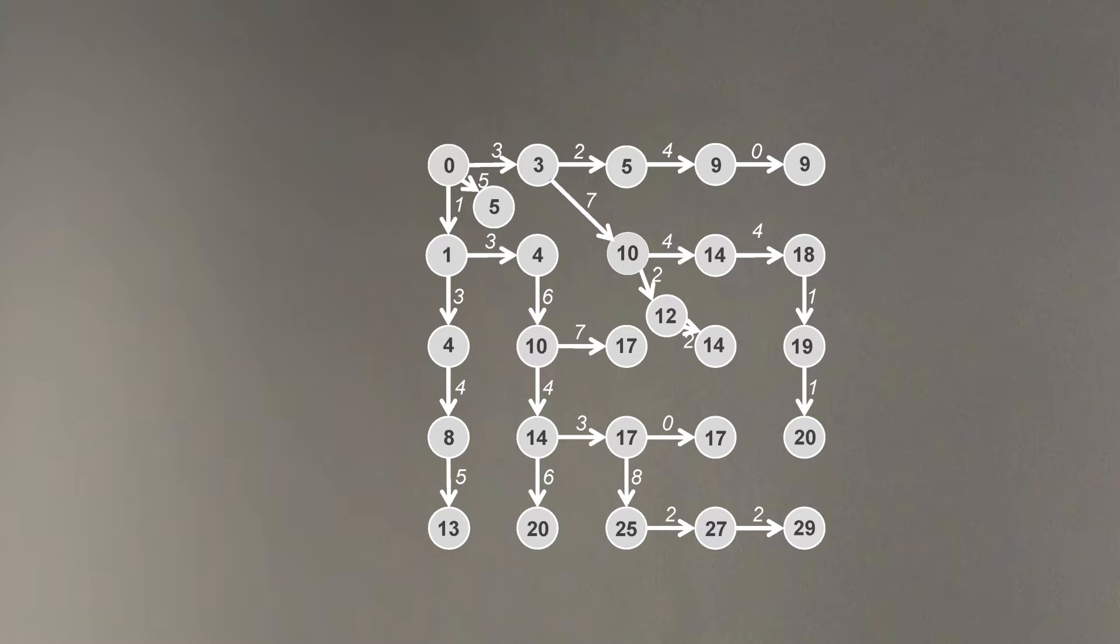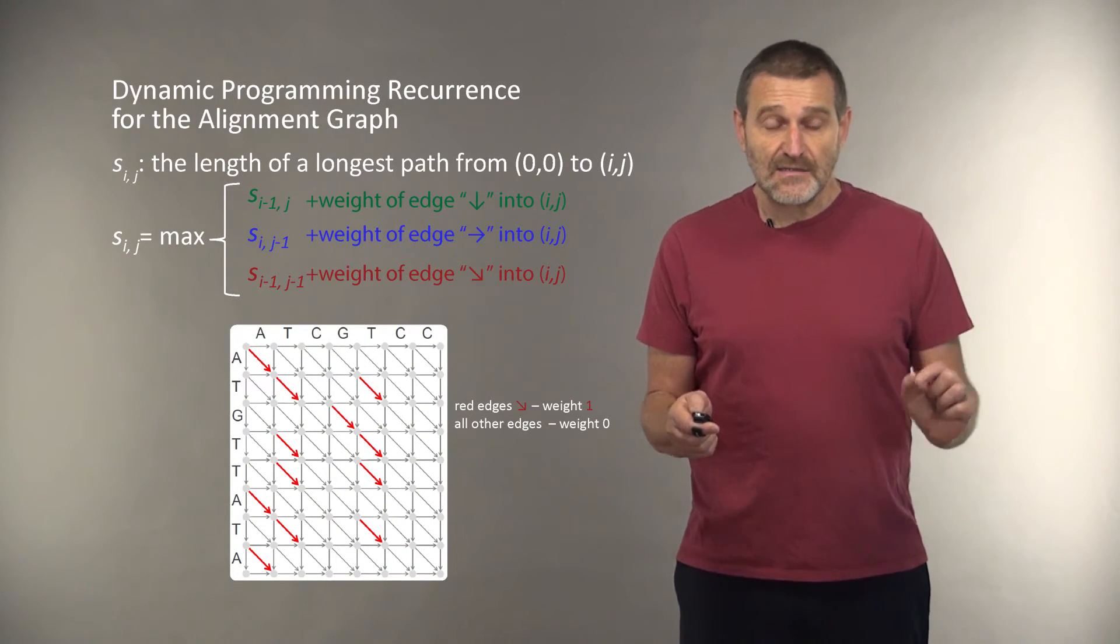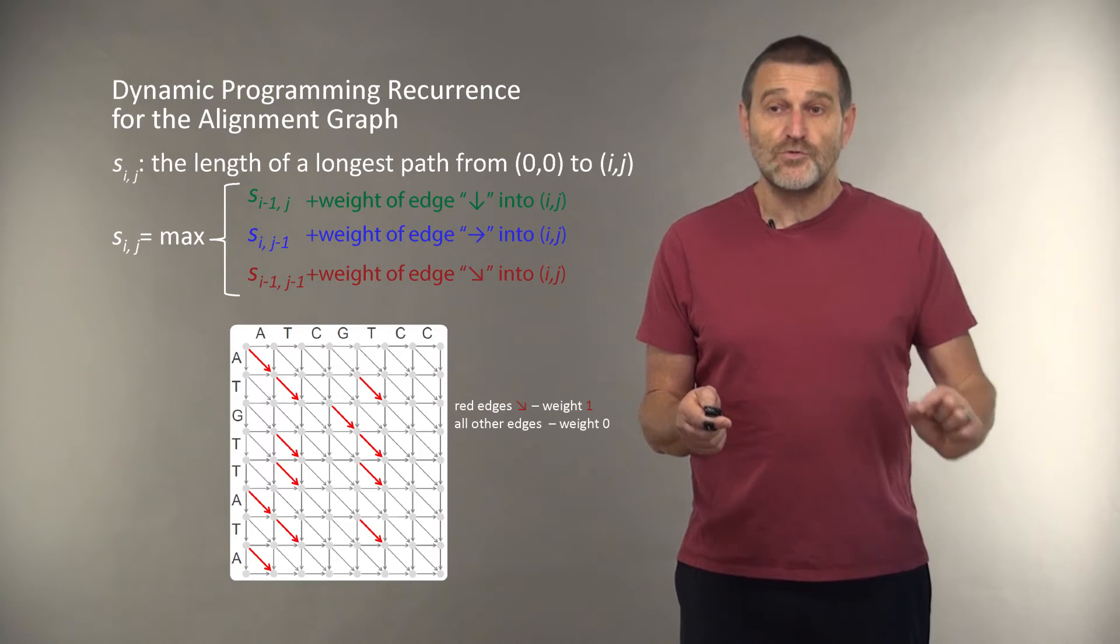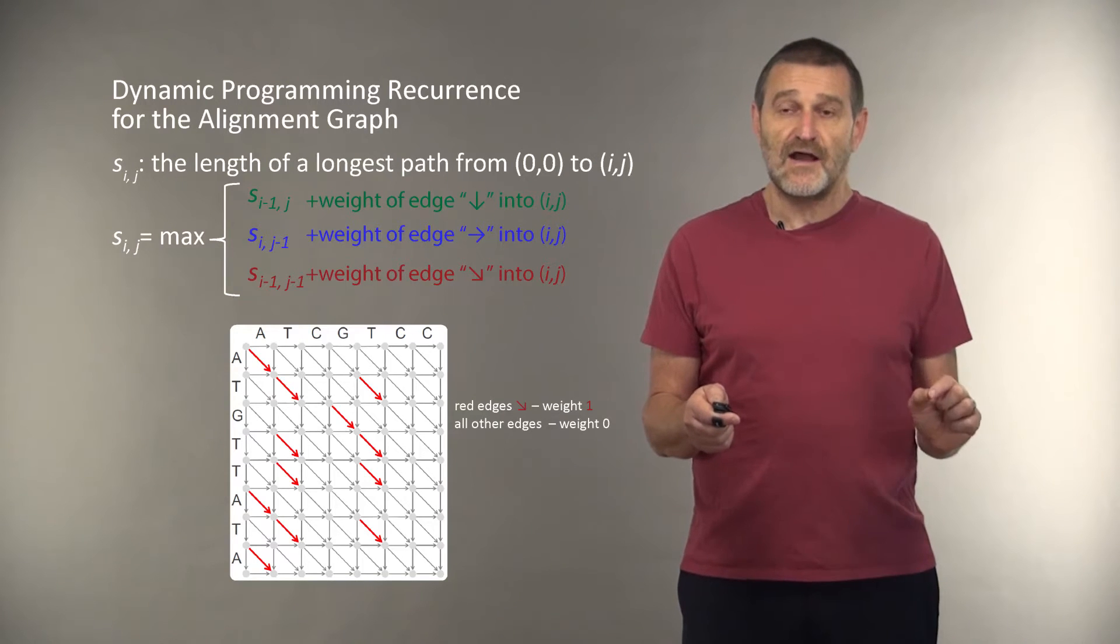And as before, we of course preserved the backtracking pointers. And that's why we will know how to move back in this graph and find the optimal path itself. As a result, we now know how to construct the recurrence for dynamic programming in alignment graphs.